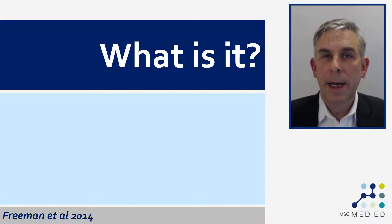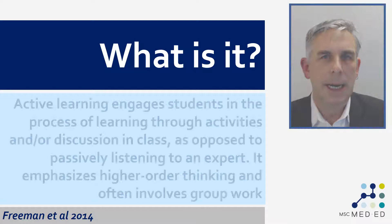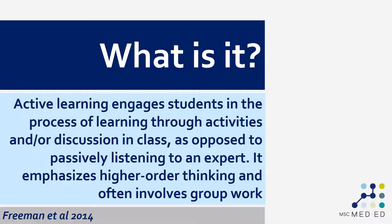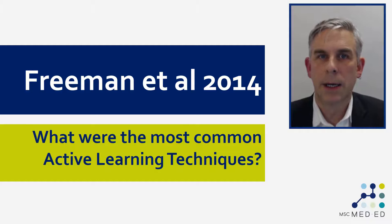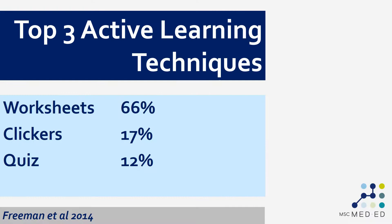If we go back to the Freeman et al. meta-analysis, this is their definition of what active learning is: active learning engages students in the process of learning through activities and/or discussion in class, as opposed to passively listening to an expert. It emphasizes higher-order thinking and often involves group work. Again, it's very difficult to pin down what it actually means to say that people were using active learning, except to say that they weren't using lectures. Thankfully, Freeman et al. published a detailed list of all the studies they analyzed, and we're able to look at the sorts of techniques that were used. The authors coded the studies according to the type of method used.